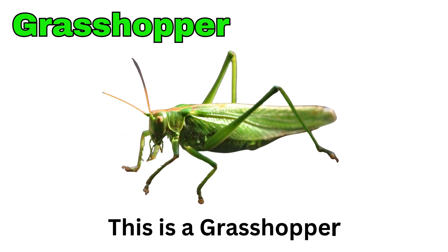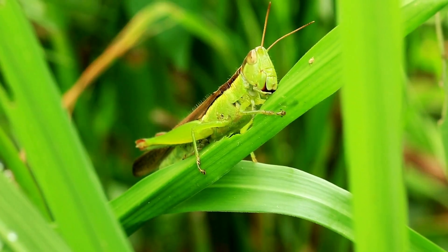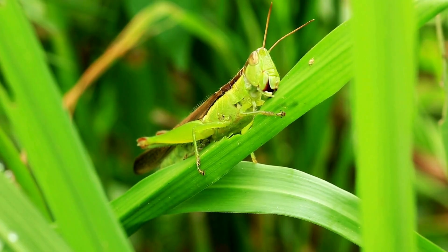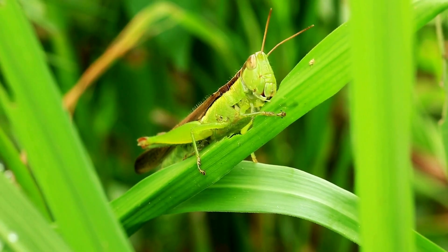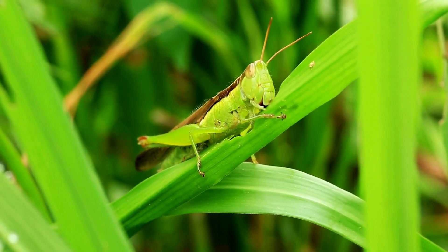Grasshopper. This is a grasshopper. It can jump very far using its strong back legs. Grasshoppers eat plants and make a chirping sound.